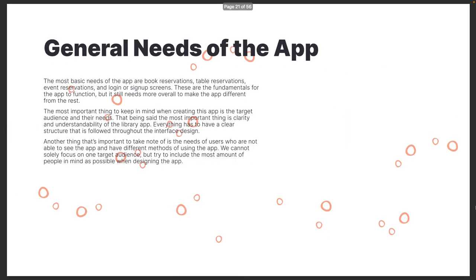For the app introduction, the most basic needs are book reservations, table reservations, event reservations, and the login or sign-up screens — these are the most fundamental for the app to actually function. I also think it's necessary to make the app different from all the other library apps that I researched. The most important thing to keep in mind is the target audience and their needs, and I think the most important thing for a user is clarity and understandability — everything has to have a clear structure that is followed throughout the interface.